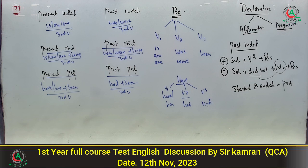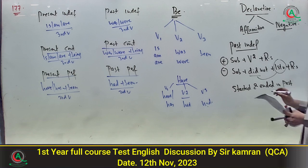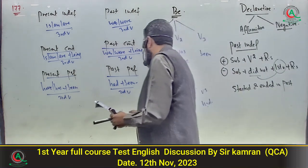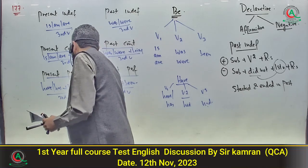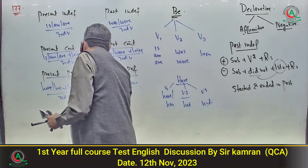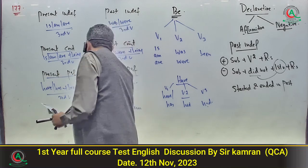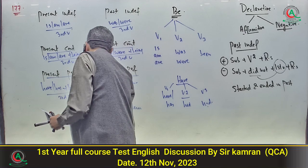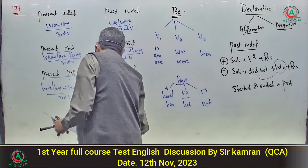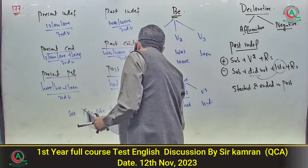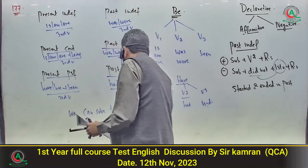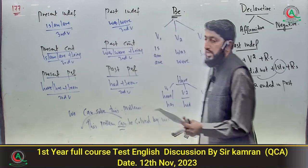Next: 'Can we solve this problem?' یہ interrogative structure ہے۔ اسے positive declarative بناؤ تو: 'We can solve this problem۔' اب اس کو passive میں change کریں تو: 'This problem can be solved by us۔'